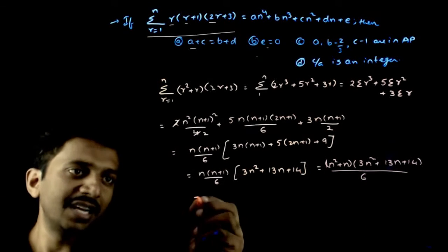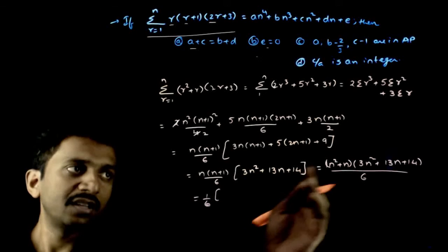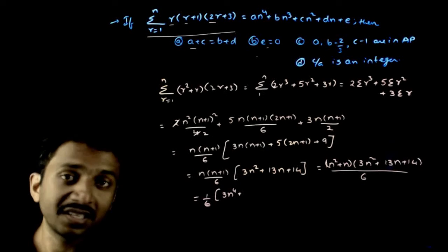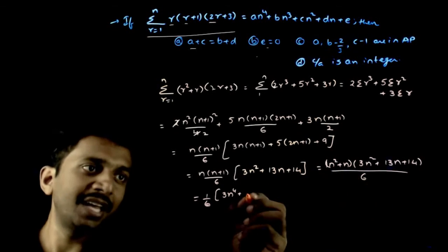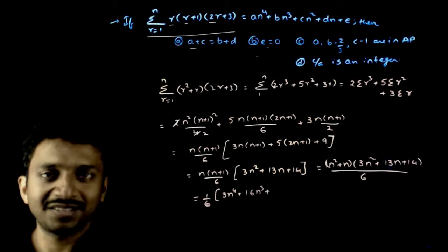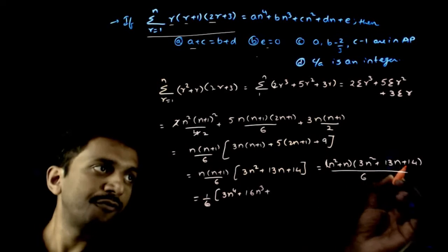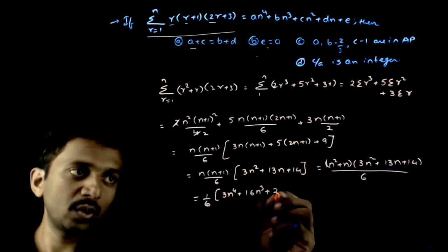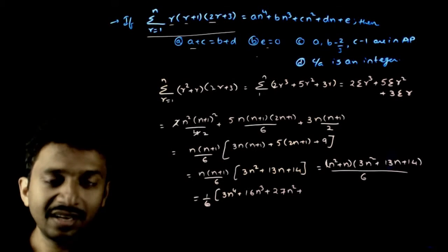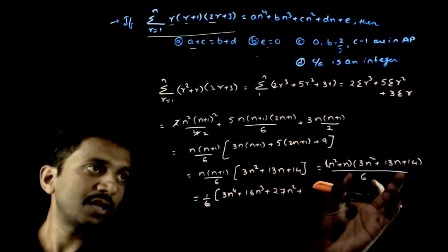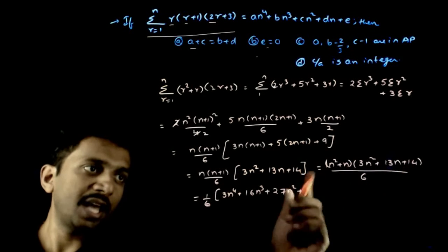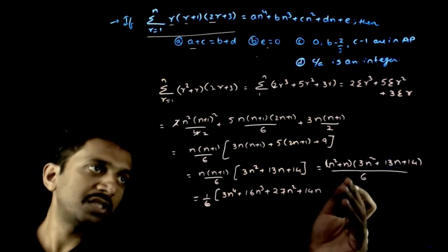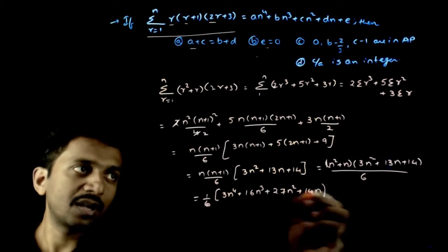That equals 1 by 6 of, now expand, you get 3n power 4. n cube: 3n cube plus 13n cube is 16n cube plus 14n square plus 13n square, that is 27n square. How many n's do you get? 14n. And will you have a constant term here? You don't have a constant.